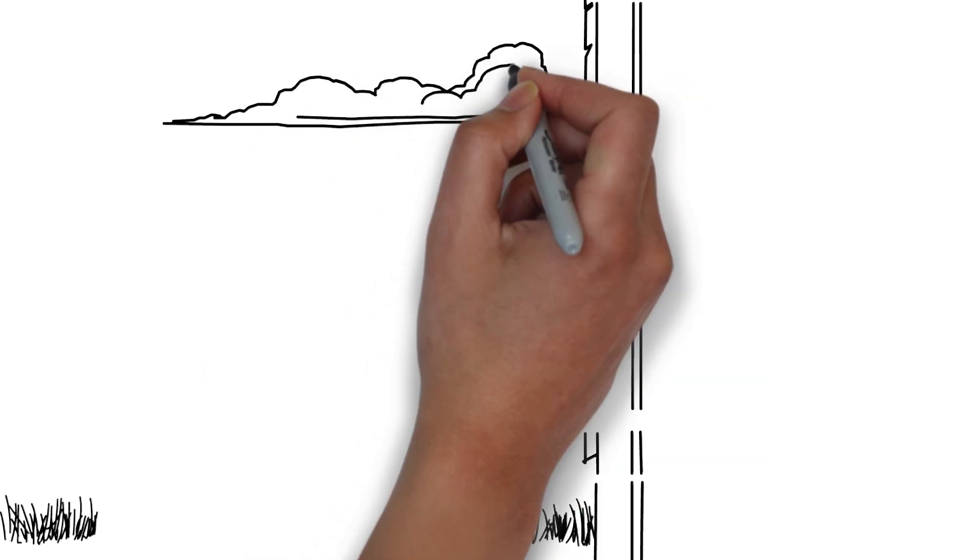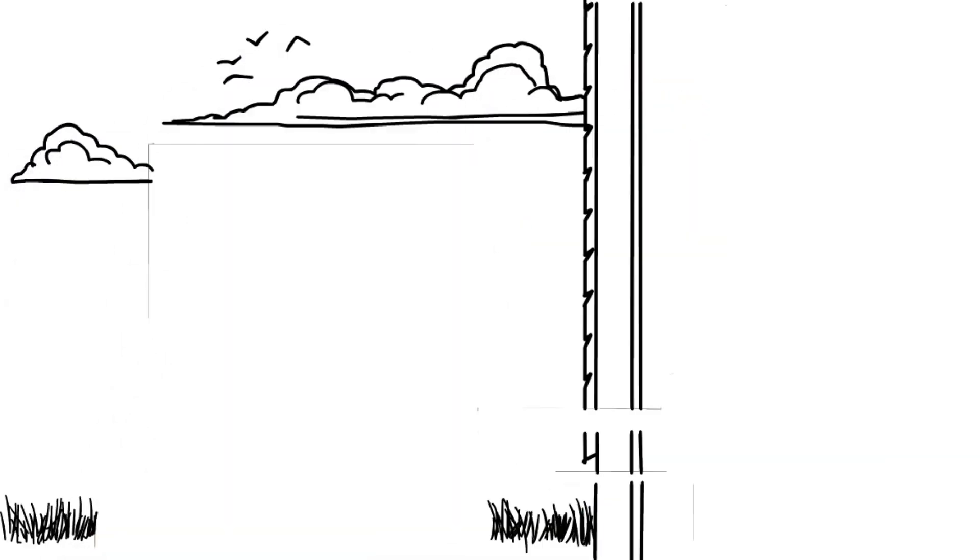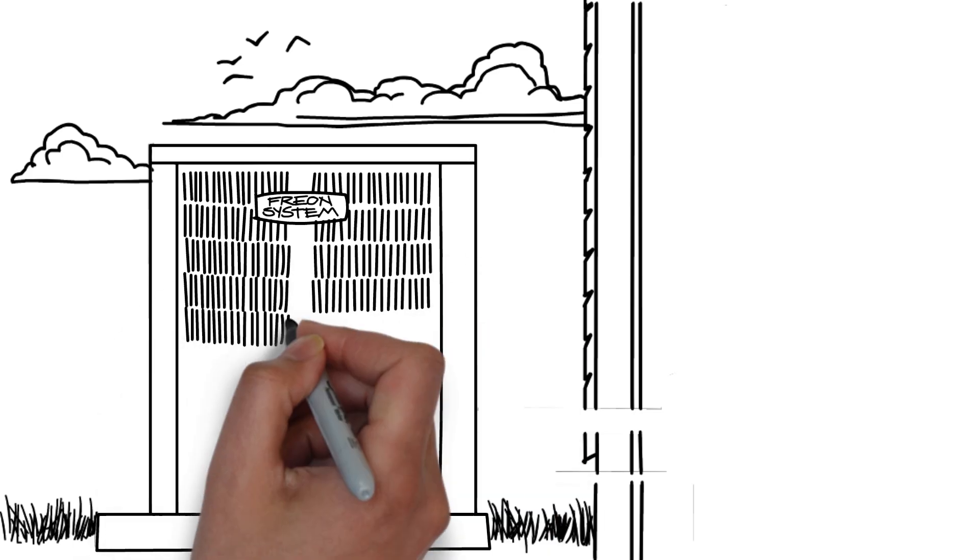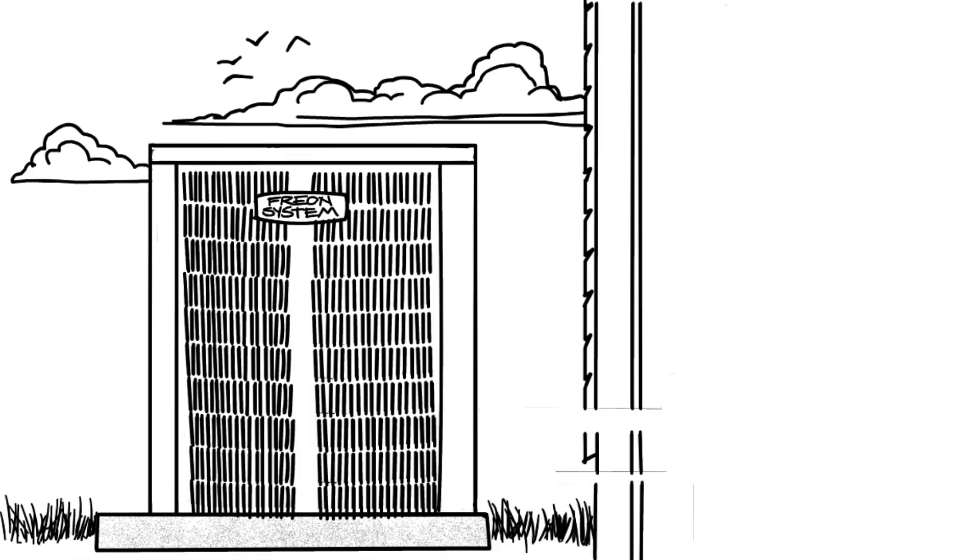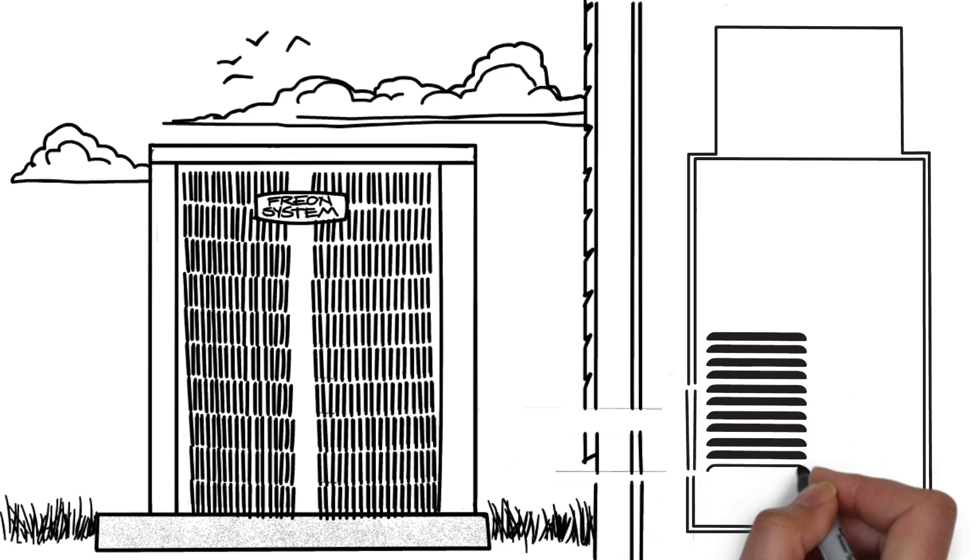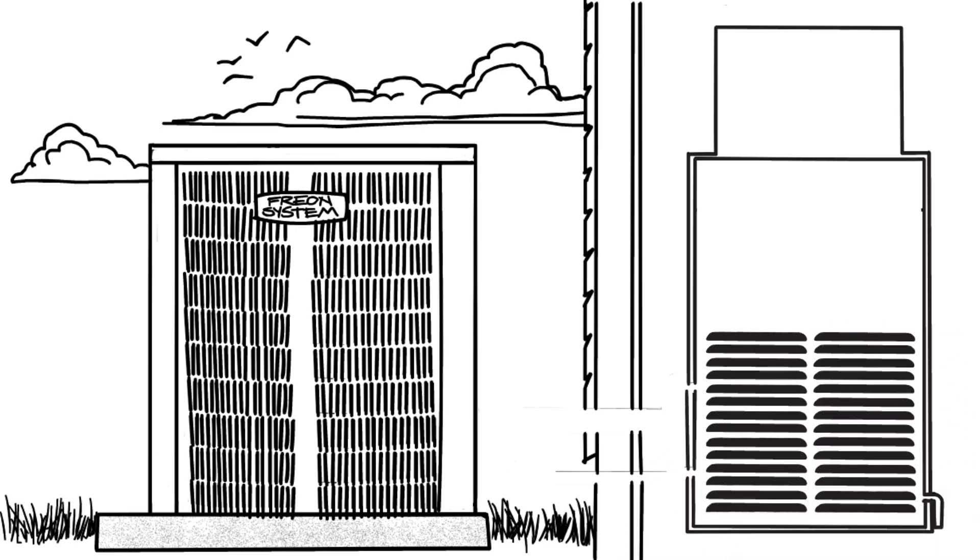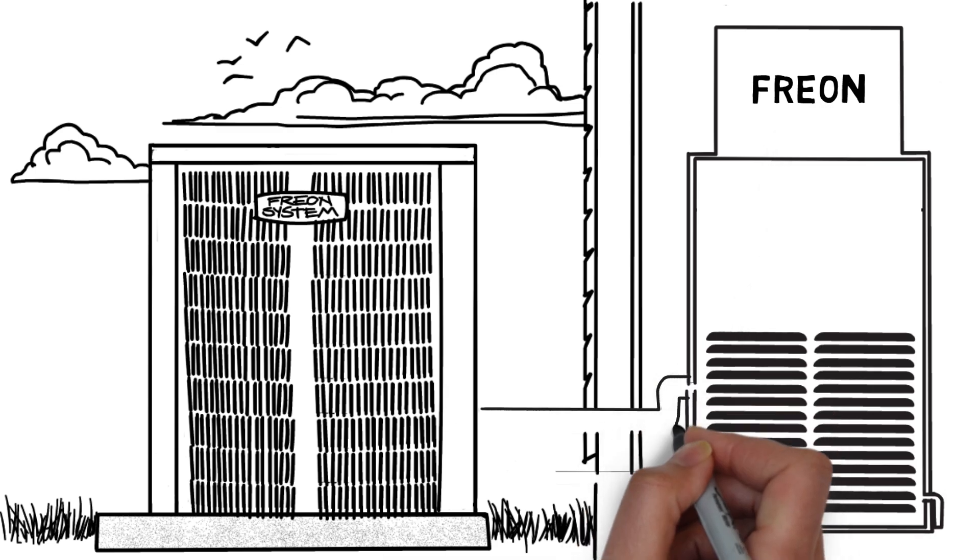A split air conditioning system has two major components that are located in two different parts of the home. The first component is a large metal box, called a condenser, that is located on the outside of the home on the ground. The second component is referred to as the air handler. The air handler is located inside the home, either in the attic, garage, or closet.